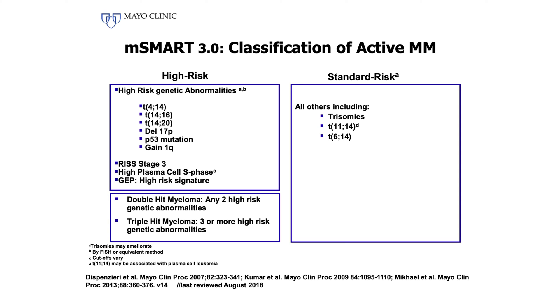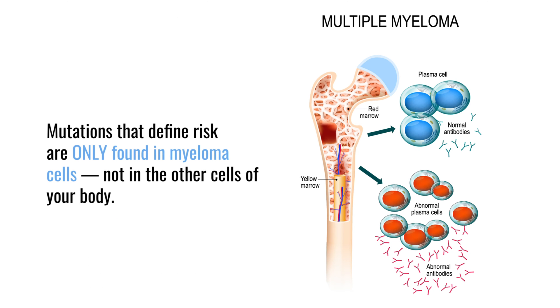When we speak about genetic abnormalities, they're not genetic abnormalities in the cells all over your body — they're just within the cancer cells themselves. And when we do those bone marrow tests, we specifically look for certain types of genetic abnormalities that we know make people higher risk or less high risk.